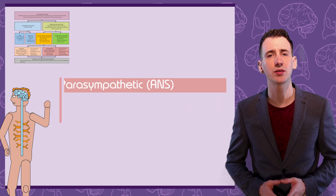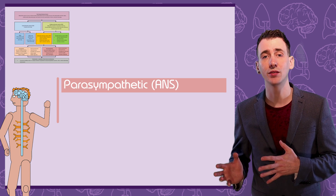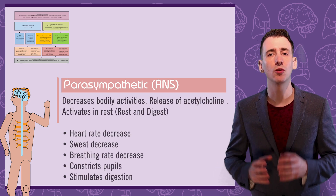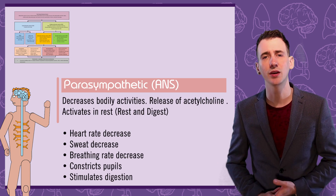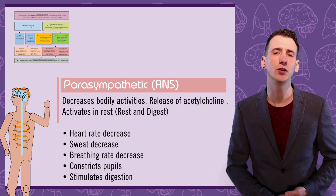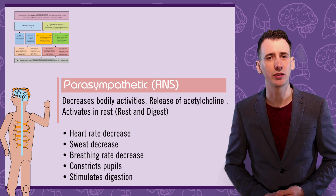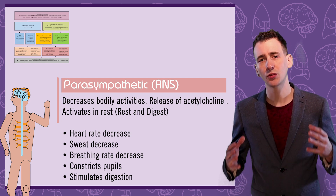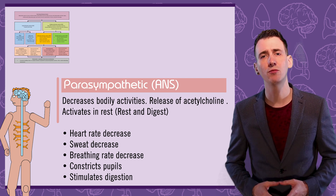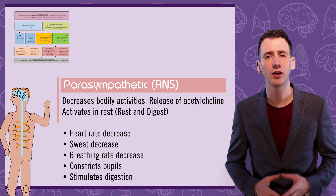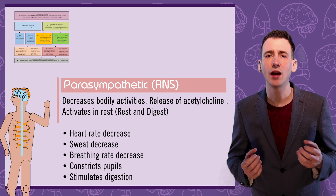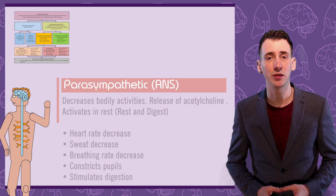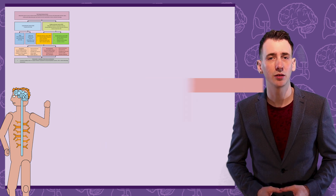The parasympathetic branch activates in rest. Neurons release acetylcholine neurotransmitter and will decrease your bodily's activities. So your heart and breathing rate will decrease, your pupils will constrict, and your digestion will be stimulated.